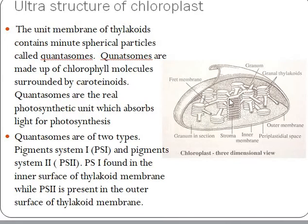The adjacent grana are connected together by connecting tubules called frets, or stromal lamellae, or stromal thylacoids. On the inner surface of the thylacoids, we can see some spherical particles called quantosomes. Quantosomes are groups of pigment molecules having chlorophyll molecules in the center surrounded by carotenoids. These quantosomes are referred to as photosynthetic units, meant for absorbing light during photosynthesis. Quantosomes are of two types: pigment system 1, found on the inner surface of the thylacoid membrane, and pigment system 2, present on the outer surface.